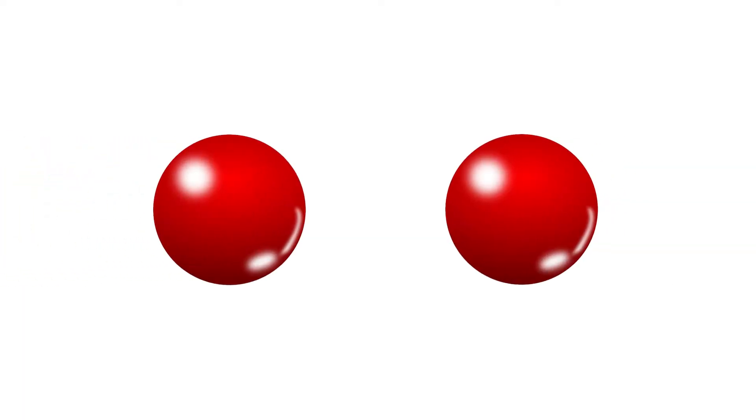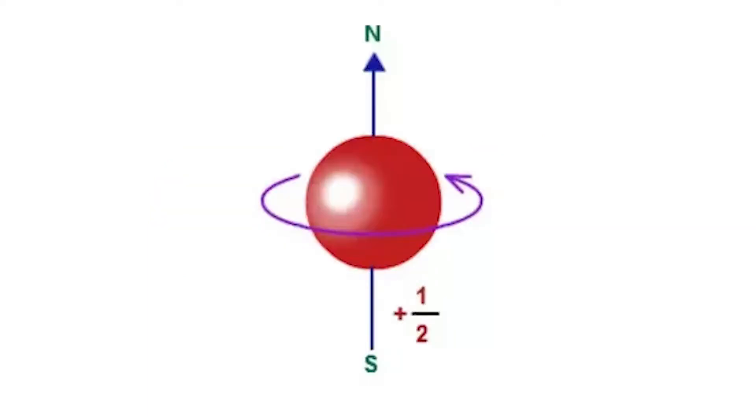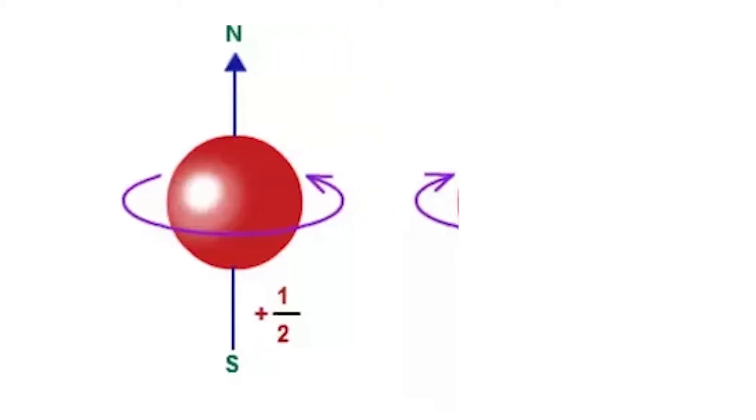If a pair of entangled particles is generated such that their total spin is known to be zero, and one particle is found to have a clockwise spin at first axis, then the spin of the other particle, measured on the same axis, is found to be counterclockwise.